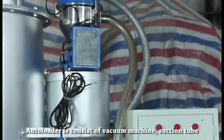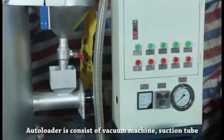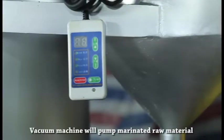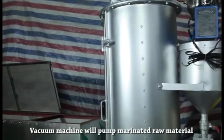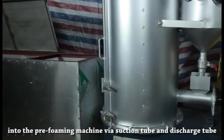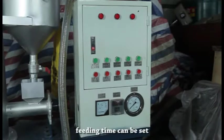The feeder consists of vacuum machine, suction tube, discharge tube, and control panel. The vacuum machine will pump material into the pre-foaming machine via suction tube and discharge tube. Feeding time can be set.